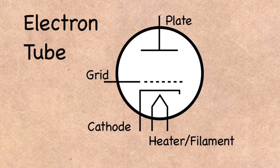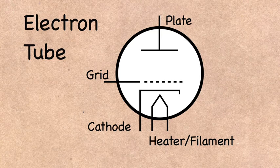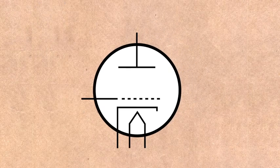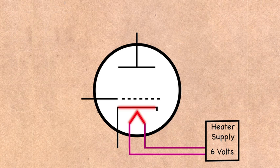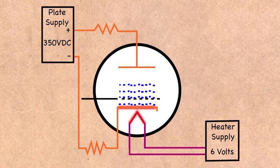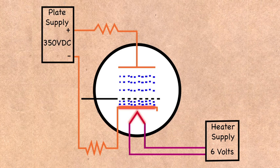It operates thus. A filament heats the cathode. This makes the cathode more emissive. In other words, the electrons of a hot cathode are more easily released. With a positive voltage applied to the plate, it draws the electrons from the cathode to it. Opposites attract.